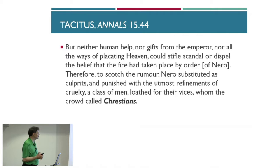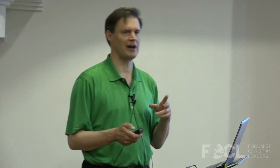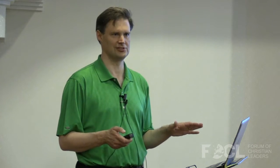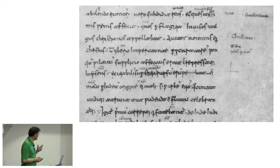This is the particular passage, and I'll read it. But neither human help, nor gifts from the emperor, that's Nero, nor all the ways of placating heaven, could stifle the scandal or dispel the belief that the fire had taken place by order. Therefore, to get rid of the rumor, Nero substituted as culprits and punished with the utmost refinements of cruelty a class of men, loathed for their vices, whom the crowd called Christians.